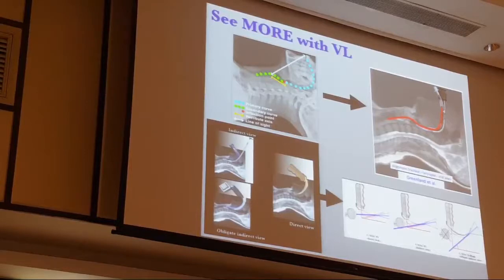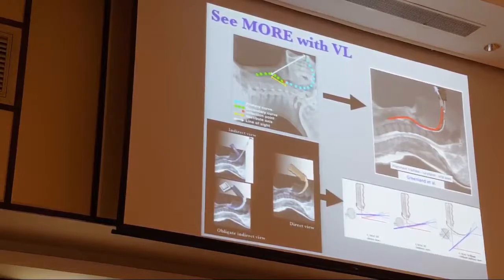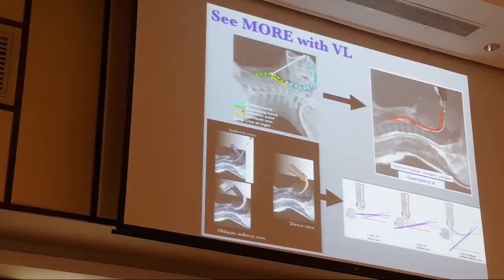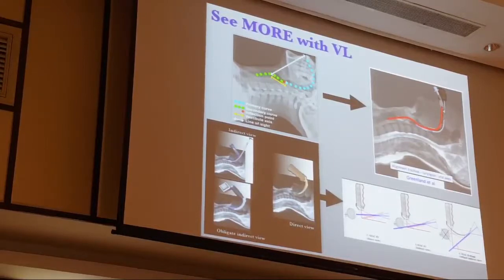One concept called the two-curve theory, by Greenland in 2008, explains how the primary curve can be improved with the blade. This is how VL technology has developed — to flatten the primary curve. Subsequent diagrams illustrate the degree of view you can achieve with VL versus DL and the angulated blade, showing clearly that you see significantly more with VL.